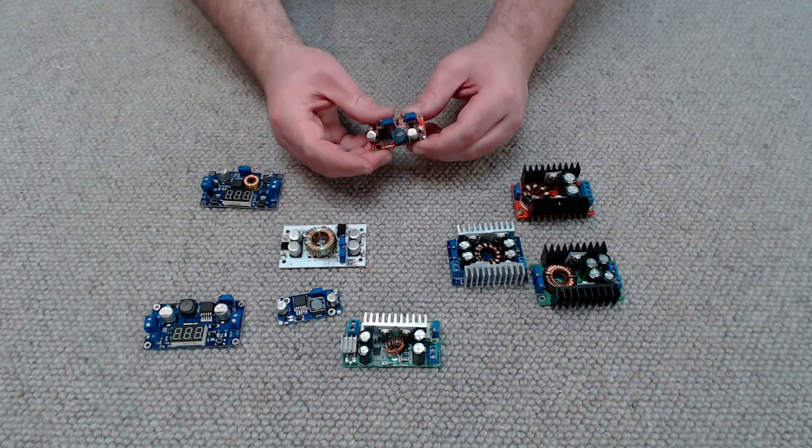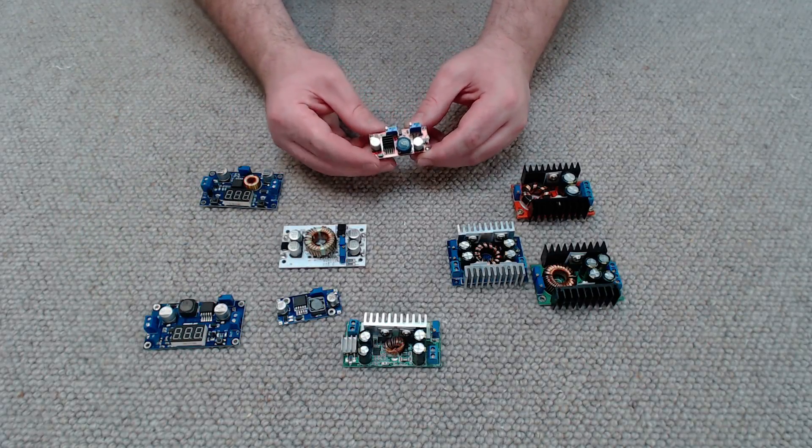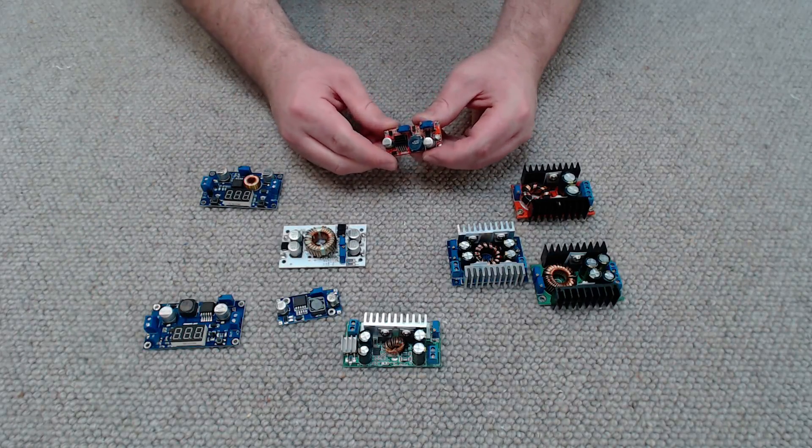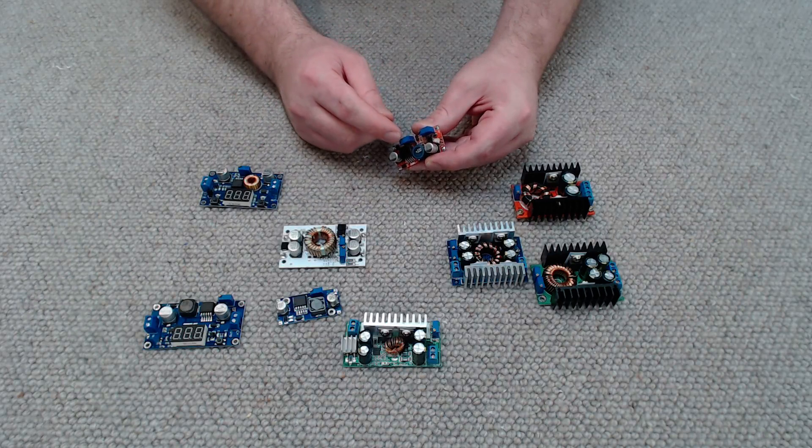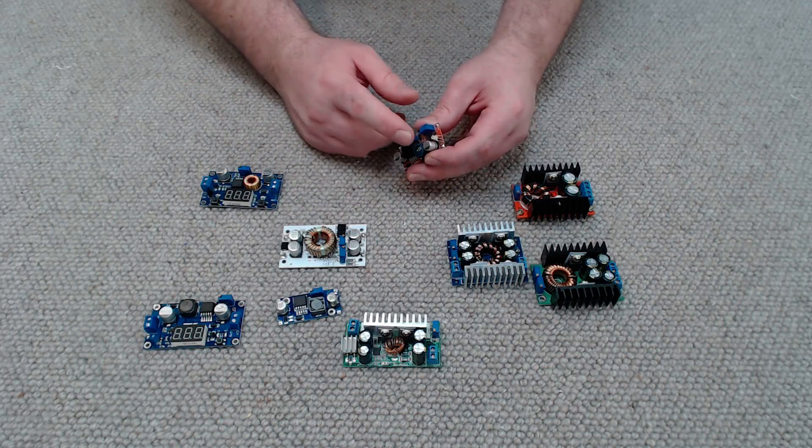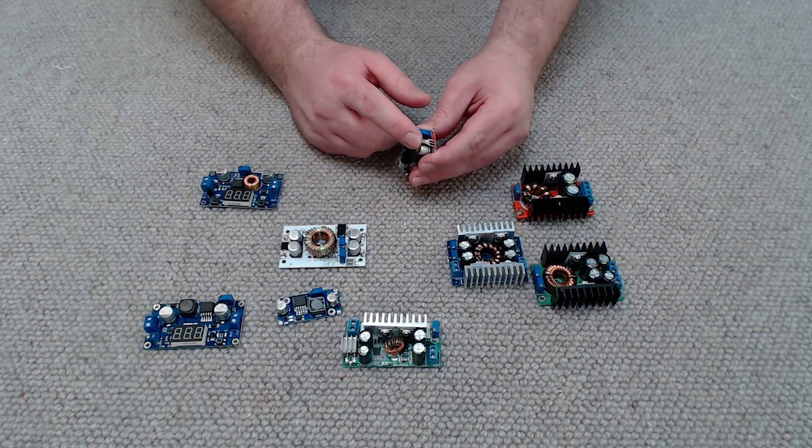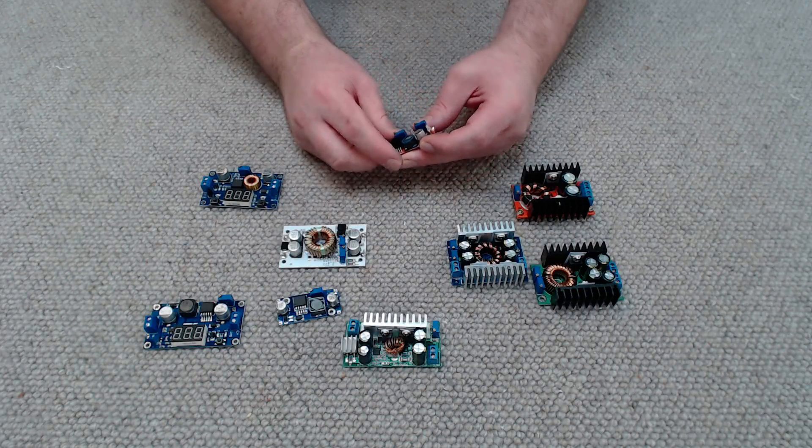This buck converter is designed to charge lithium batteries though there's no reason it can't be used just purely as a buck converter. It has a trim pot for adjusting voltage and current and it has a bi-color LED on it to indicate when the battery is being charged and when it's fully charged.